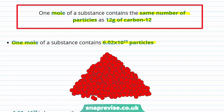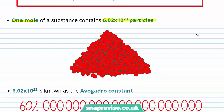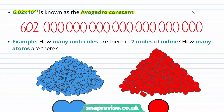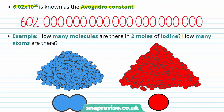One mole of any substance contains the same number of particles. And this number, 6.02 times 10 to the 23, is known as Avogadro's constant. We usually write 6.02 times 10 to the 23 in standard form because it avoids us having to write all of the zeros. Here you can see Avogadro's constant written out in full, showing you that when we're talking about a mole, we're talking about a lot of particles.